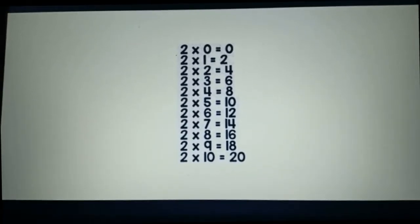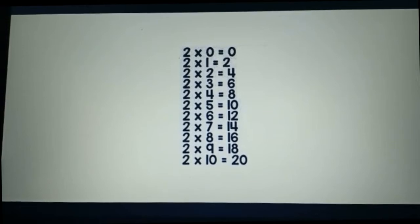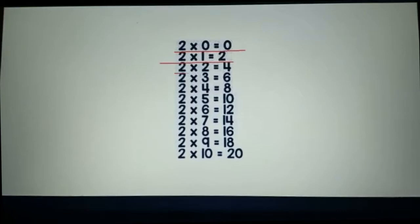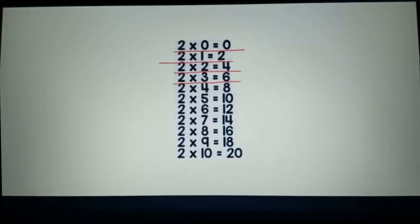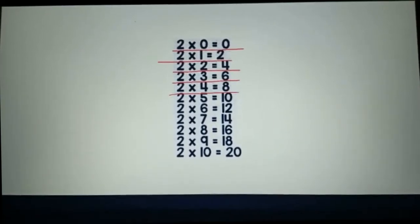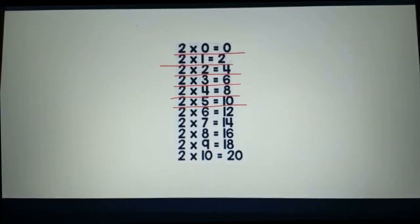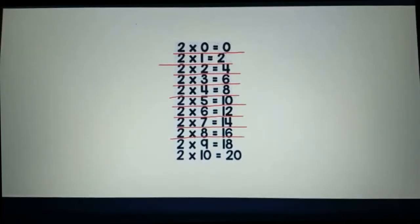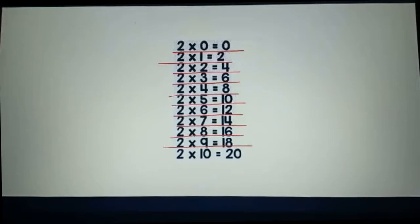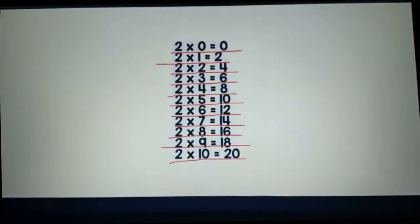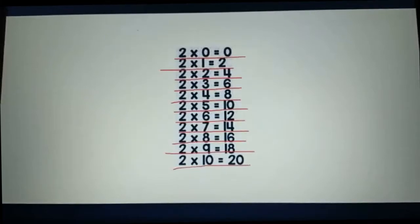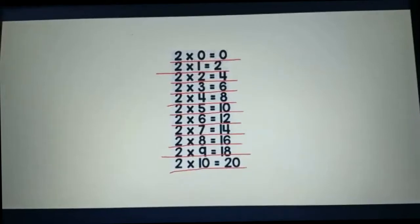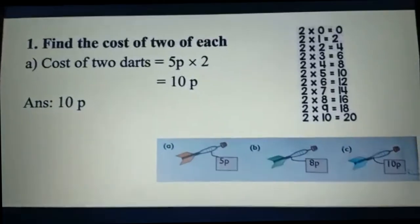Here is the times table of 2. Two zeros are zero, two ones are two, two twos are four, two threes are six, two fours are eight, two fives are ten, two sixes are twelve, two sevens are fourteen, two eights are sixteen, two nines are eighteen, two tens are twenty. All of you have to know the times table of 2 to solve this problem.